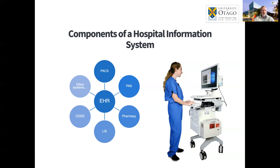There are also laboratory information systems used in the hospital laboratory. When a doctor orders a blood test through the electronic health record, which can be linked to the laboratory information system, how the blood sample is processed and tested is all stored there, and the results can then be sent back to the electronic health record system. There are also clinical decision support systems that help doctors, nurses, and other clinicians. For example, when a doctor starts prescribing a drug using the computer, they might see a pop-up indicating whether or not the patient is allergic to that drug. These systems can also guide healthcare workers through the correct sequence of tests and diagnoses for particular conditions.